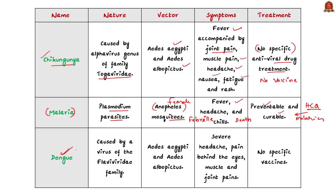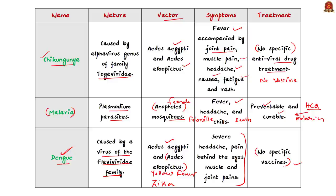Dengue is a mosquito-borne viral disease caused by a virus of the Flaviviridae family. Dengue virus is transmitted by female mosquitoes mainly of the species Aedes aegypti, and to a lesser extent Aedes albopictus, which are also vectors for chikungunya, yellow fever, and Zika virus. Symptoms of dengue include high fever with severe headache, pain behind the eyes, and muscle and joint pains. There are no specific vaccinations or anti-viral treatments available against dengue fever, though symptoms can be managed.